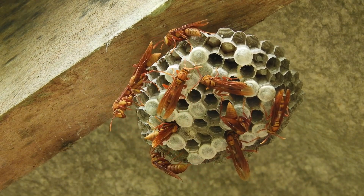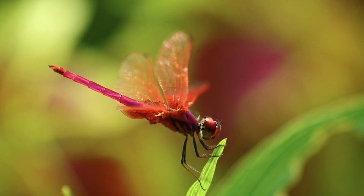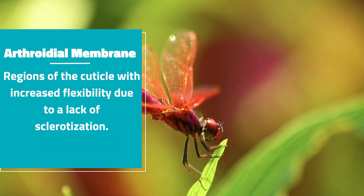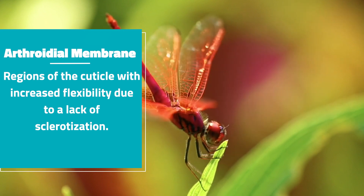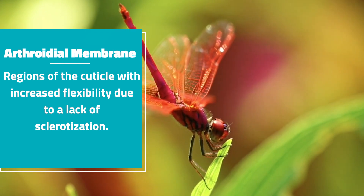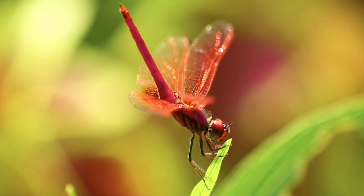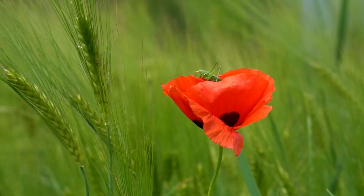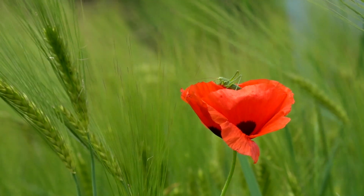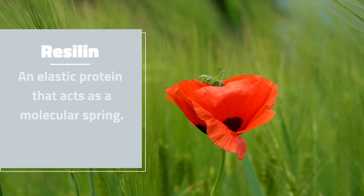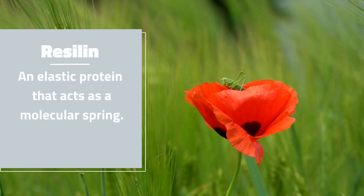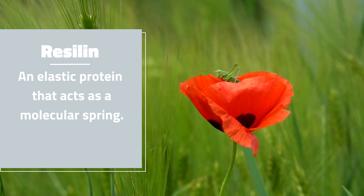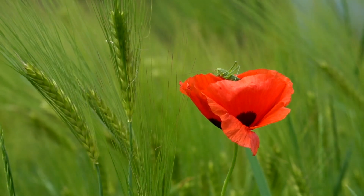The shed left behind after a molt is called the exuviae. Flexibility in the cuticle is provided by arthroidal membranes — regions of the cuticle with increased mobility due to a lack of sclerotization. These regions are usually apparent between joints and body segments. In regions that need to be more flexible than the arthroidal membrane alone can provide, the elastic protein resilin can be present, acting as a molecular spring. Resilin is usually present in the joints of saltatorial legs and in the joints of wings.